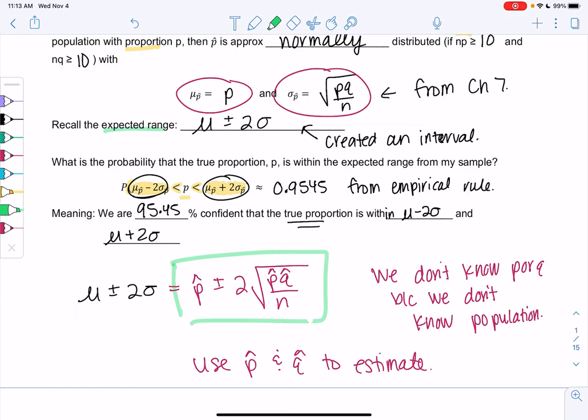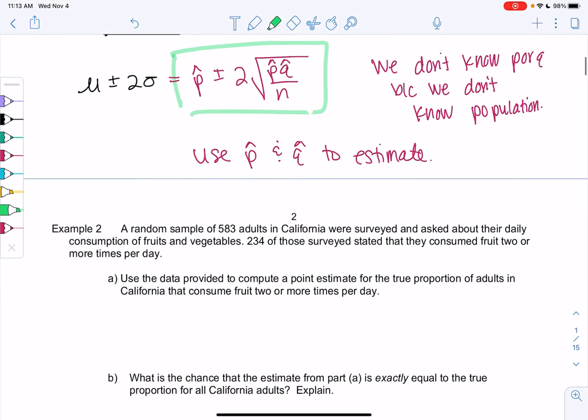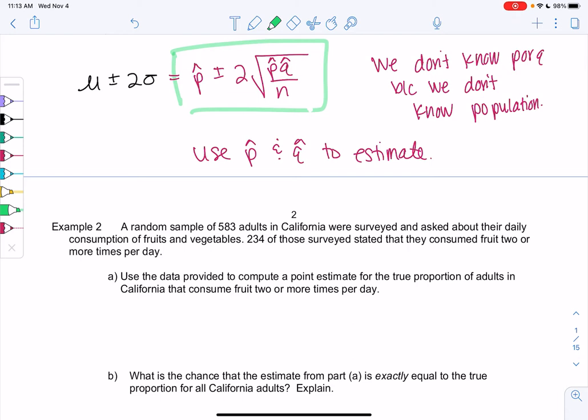Let's check out an example. I think it makes a lot more sense when we do an example. Example two: we have a random sample of 583 adults in California were surveyed and asked about their daily consumption of fruits and vegetables. 234 of those surveyed stated that they consume fruit two or more times per day. So that's kind of like my success, consuming fruit two or more times per day.